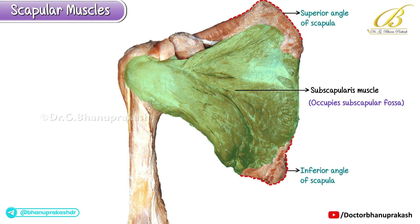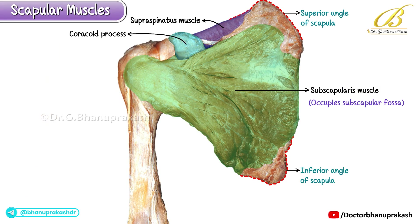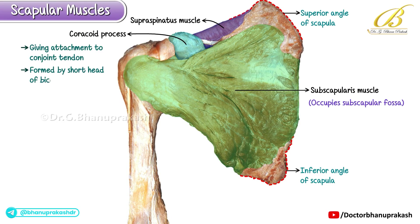From this anterior view, we can clearly observe the subscapularis muscle, which occupies the subscapular fossa. Its fibers converge laterally to insert onto the lesser tubercle of the humerus. Other structures visible in this specimen include the supraspinatus muscle, located along the superior aspect of the scapular region. The coracoid process is seen projecting laterally.